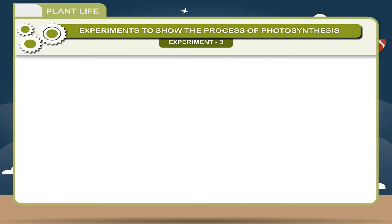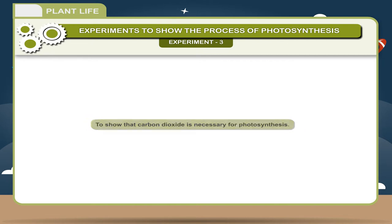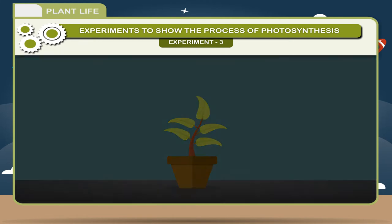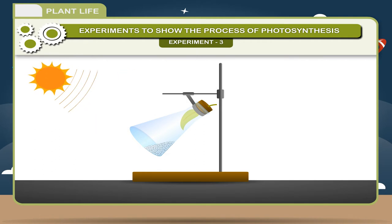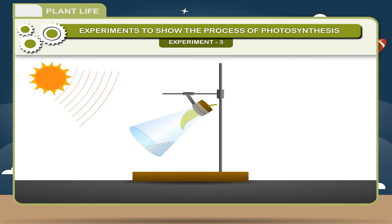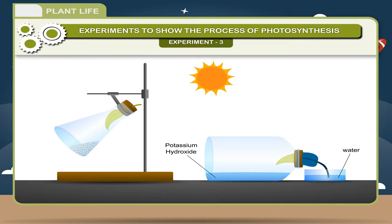Experiment 3: To show that carbon dioxide is necessary for photosynthesis. Take a plant with destarched leaves. Insert one of its leaves through a split cork into a conical flask containing potassium hydroxide. Potassium hydroxide absorbs carbon dioxide. Place this plant in the sunlight. After a few hours, test any other leaf of this plant for starch. The leaf which was exposed to the atmospheric air becomes blue-black, and the one inside the flask containing potassium hydroxide does not become blue-black, showing that carbon dioxide is necessary for photosynthesis.